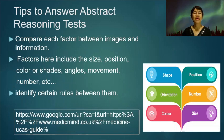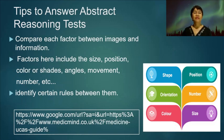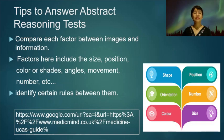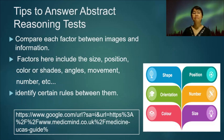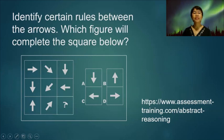Here are some tips to answer abstract reasoning tests. Compare each factor between images. These factors include size, position, color or shades, angles, movement, numbers, and others. Then identify certain rules between them.